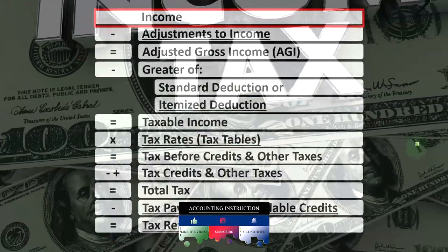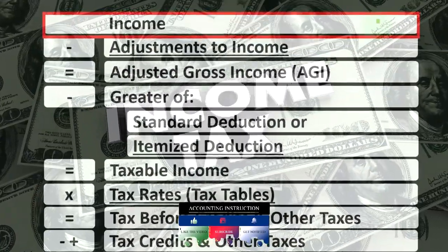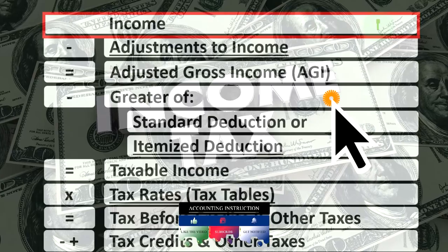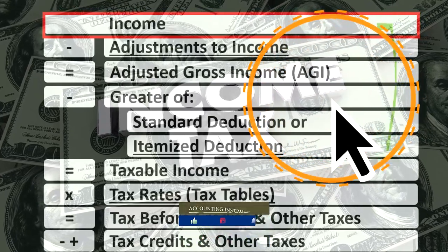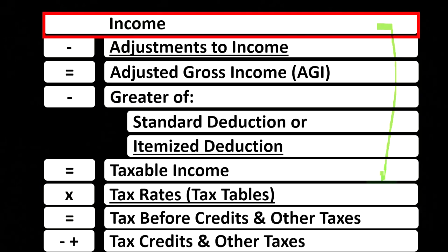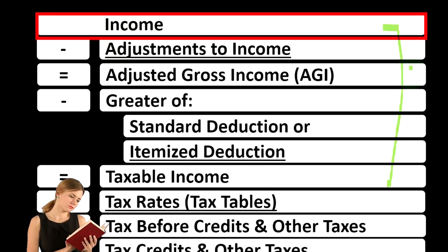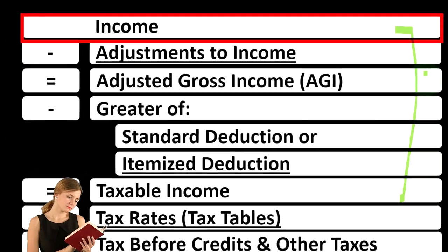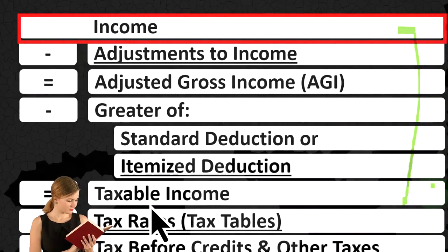Looking at our income tax formula, we're focused once again on line one, income. The income tax formula, the first half of it, is in essence an income statement, although a strange one, where we have income minus the equivalent of expenses — those being the deductions — which gets us to the equivalent of net income, this being the taxable income.